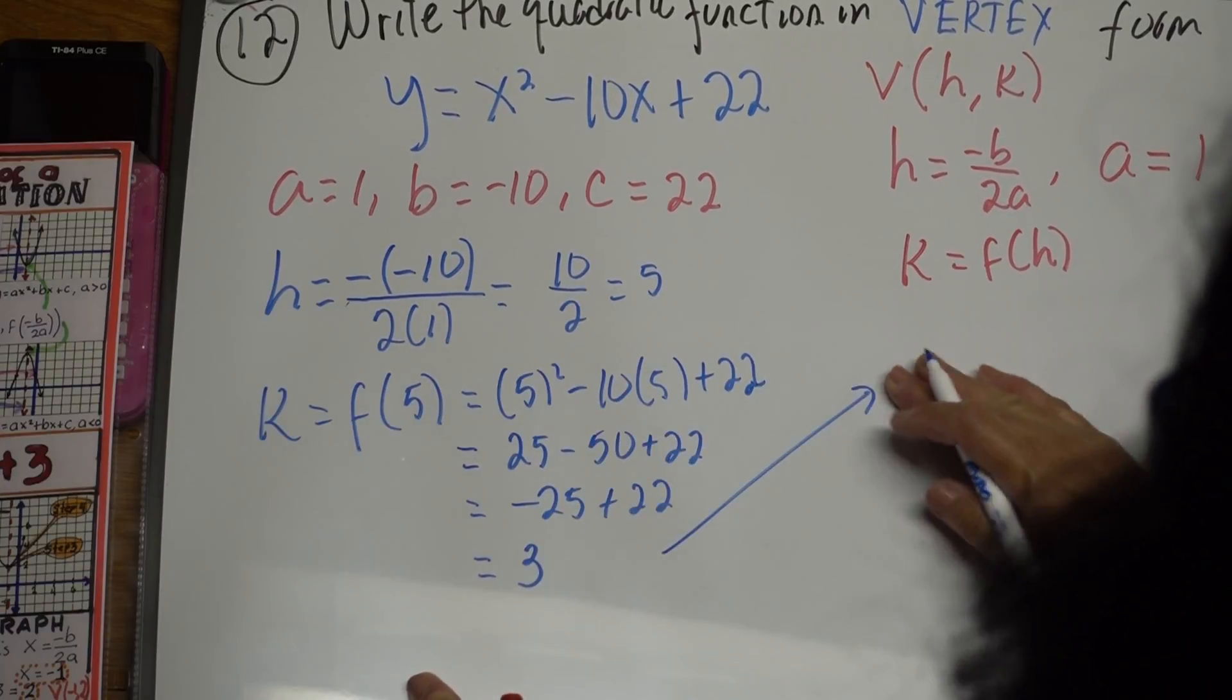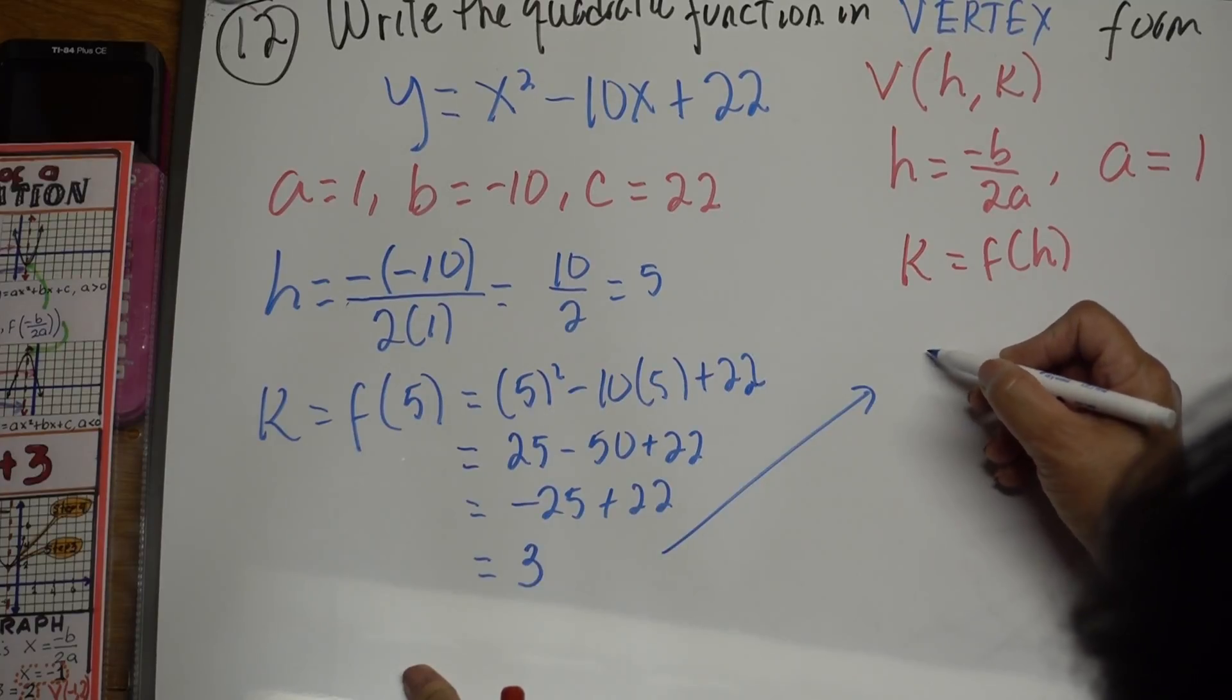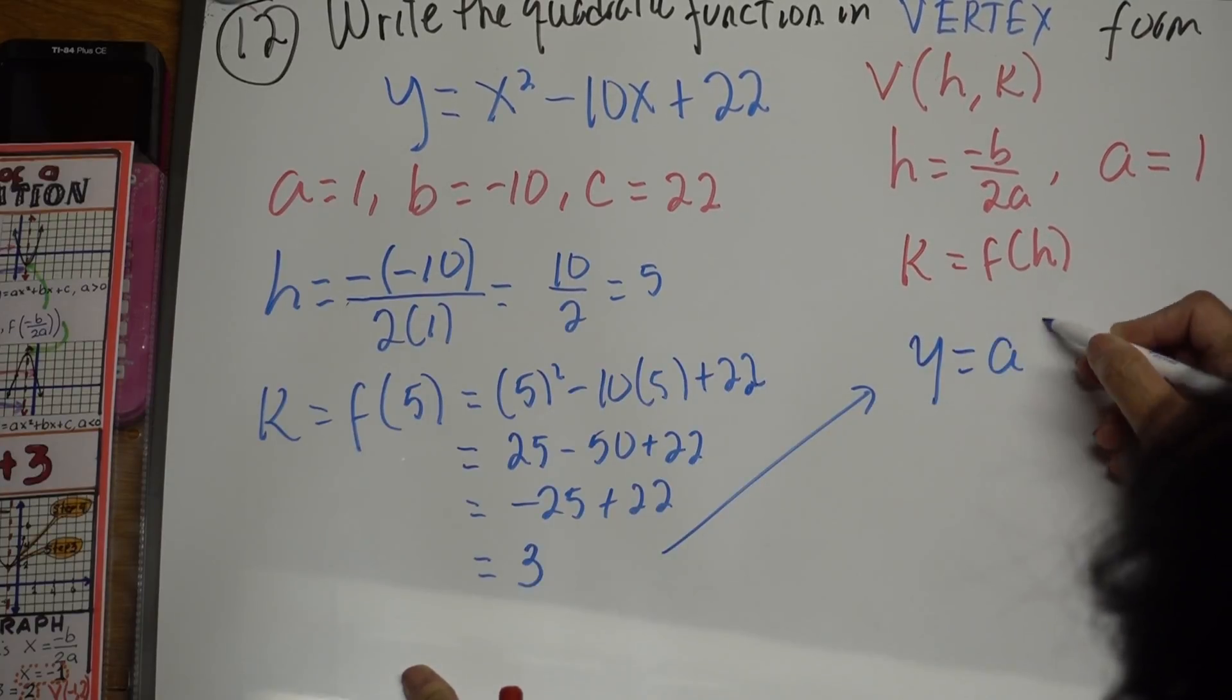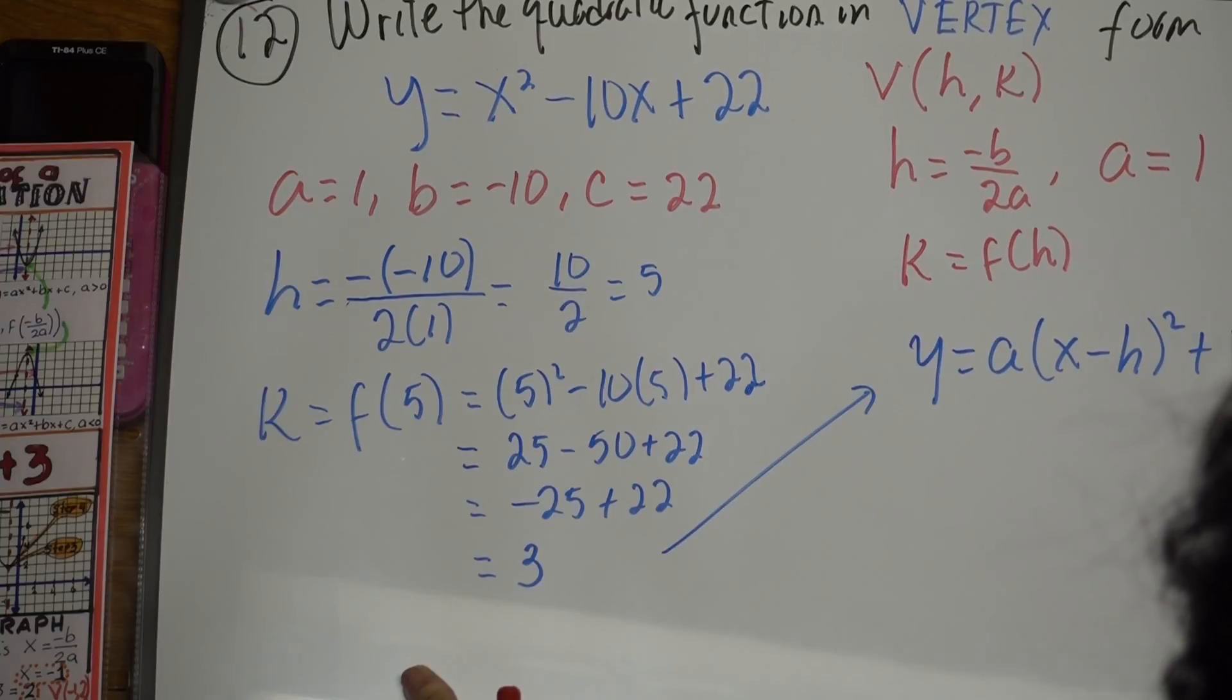But we actually want to write in vertex form. So the vertex form is going to be y equals a times x minus h squared plus k.